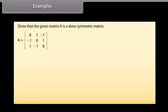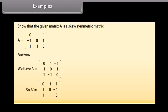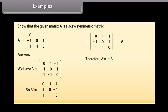Example. Show that the given matrix A is a skew-symmetric matrix. We have given A. So A transpose is the matrix with first row 0, −1, 1; second row 1, 0, −1; third row −1, 1, 0. We can see that this equals minus A. Therefore A' equals minus A. Hence A is a skew-symmetric matrix.